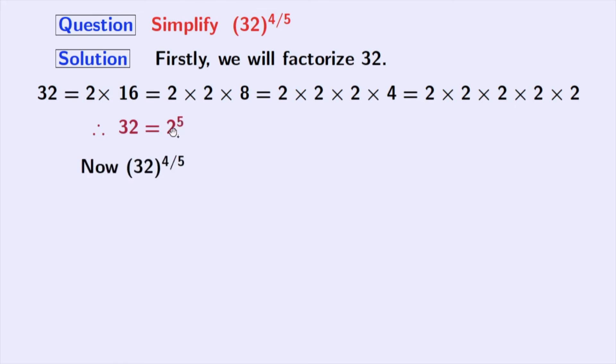Now our given quantity is 32 whole power 4 by 5. Using this fact, we can express this quantity as 2 power 5 whole power 4 by 5. Now this quantity can be written as 2 power 5 times 4 by 5.